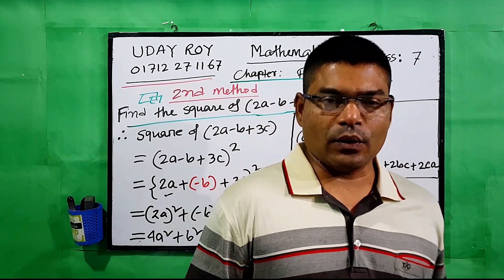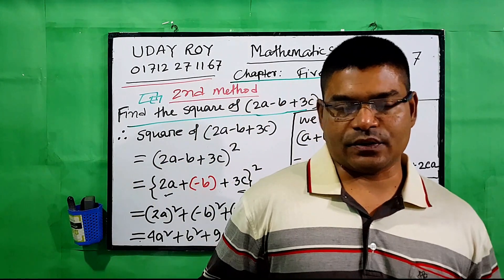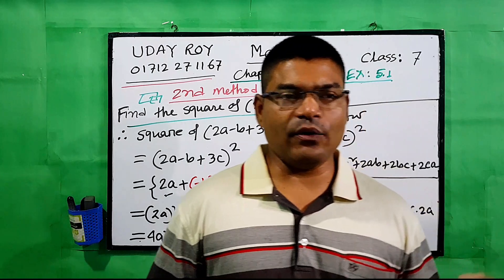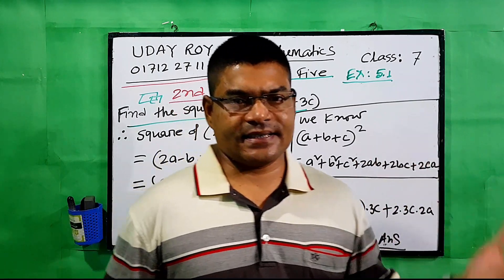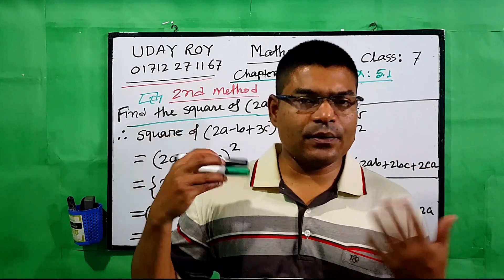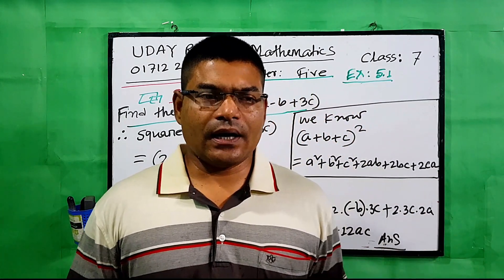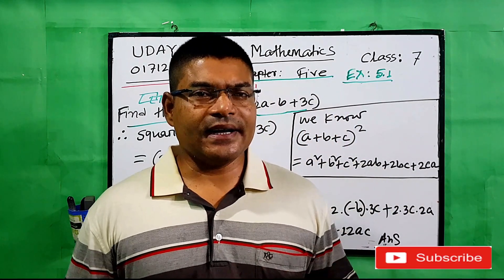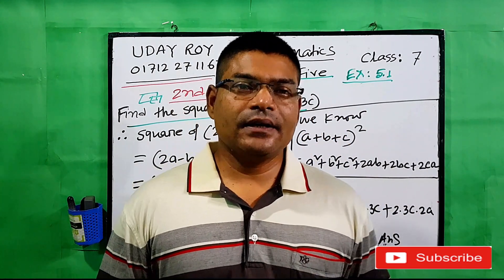We have now done all three methods: (a + b)², (a - b)², and (a + b + c)². This is a very important topic for this chapter. If you have any queries about this mathematics or exercise, you can contact me. Please subscribe to our channel. The next topic will be: find the value, show that, and prove that. Thank you all.